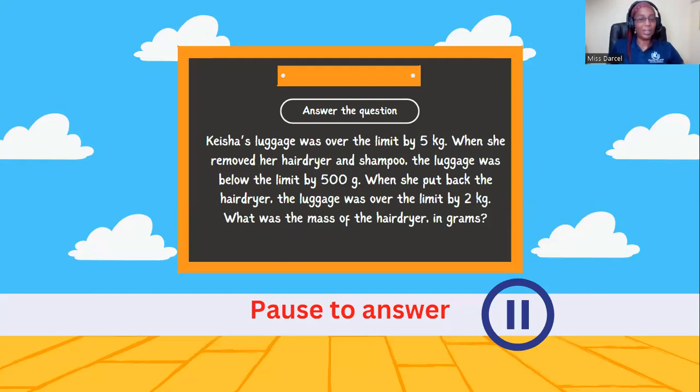Oh, this one is a tricky one. Keisha's luggage was over the limit by 5 kg. When she removed her hairdryer and shampoo, the luggage was below the limit by 500 grams. When she put back the hairdryer, the luggage was over the limit by 2 kg. What was the mass of the hairdryer in grams? Pause to answer.